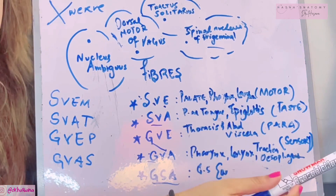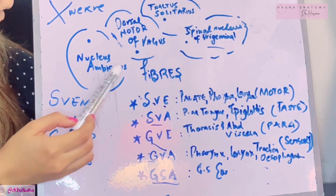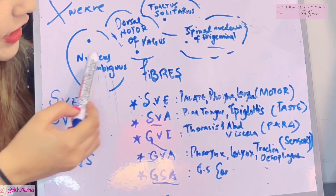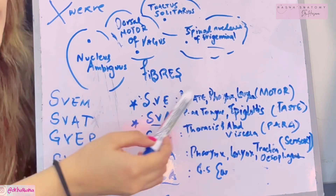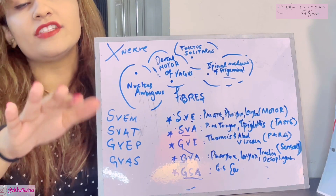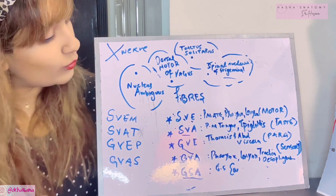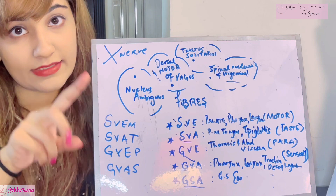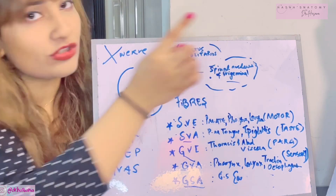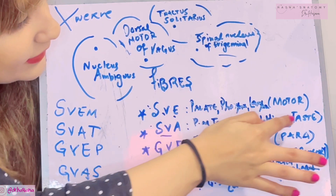The motor nucleus for the special visceral efferent fibers is always the nucleus ambiguus, so these fibers all begin from there. For special visceral afferents — SWAT, T for taste — the vagus carries taste from the posterior-most part of the tongue and the epiglottis. Taste and sensory sensations always go to the tractus solitarius nucleus. T for taste, S for sensory, TS equals tractus solitarius nucleus — so taste fibers all go to the tractus solitarius nucleus.